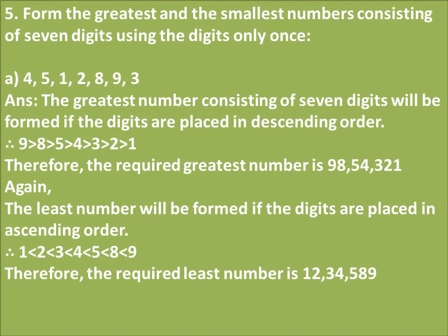Number 5: form the greatest and smallest number consisting of 7 digits using the digits only once. For number a, arranging digits in ascending order gives the smallest number. The required smallest number is 12,34,589.